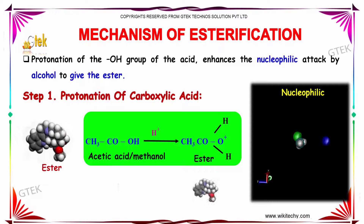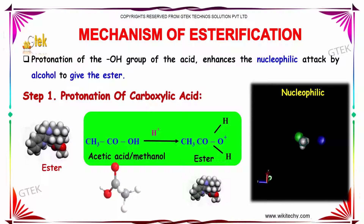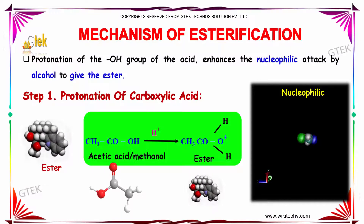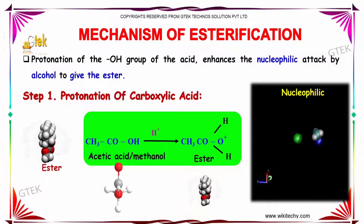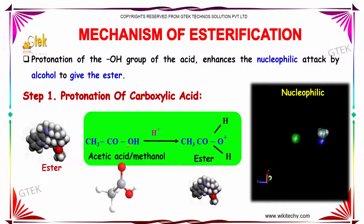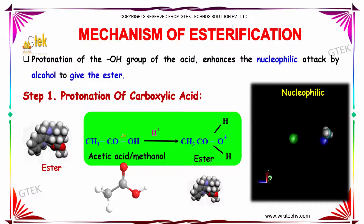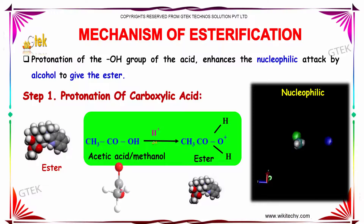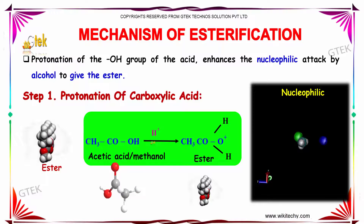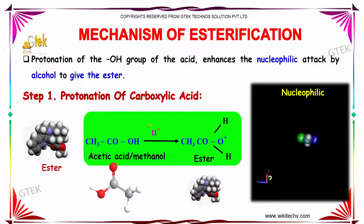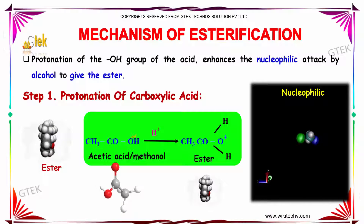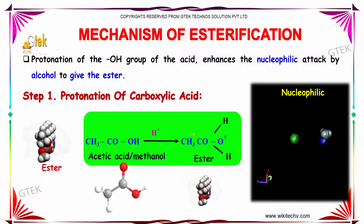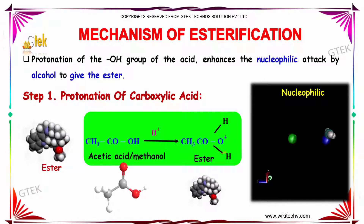Now let us study about the mechanism of esterification. The first step is the protonation of carboxylic acid. First, acetic acid is taken and mild protonation is done. The positive ion is shifted to the oxygen present here. Thus the formation of ester takes place.